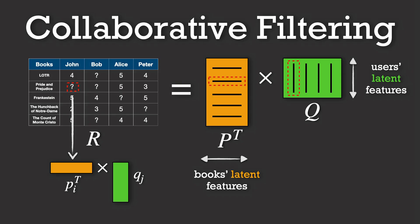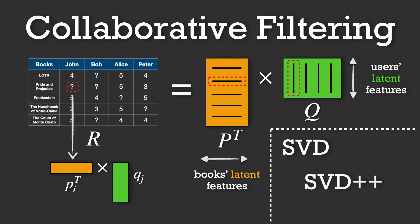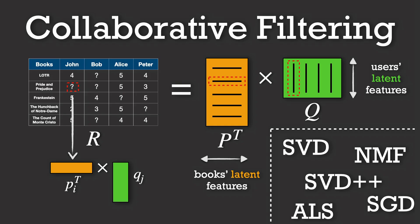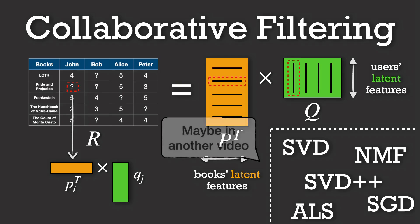The challenge is to learn these latent vectors such that the dot product approximates the actual ratings as closely as possible. There are many algorithms that factorize the matrix well, such as singular value decomposition or SVD, SVD++ which is an improved SVD factorization, non-negative matrix factorization, alternating least squares, or by simply using stochastic gradient descent on a minimization objective like the squared difference between your ratings and your predictions. However, I will not cover these factorization methods in this video, since they deserve a dedicated discussion to explore their mathematical foundations and implementation details properly.